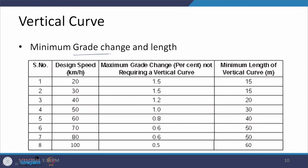There are minimum values to be taken care of regarding minimum grade change and length. For design speeds ranging from 20 km/h to 100 km/h, the first column shows the maximum grade change in percent not requiring a vertical curve. For example, at 100 km/h, if the maximum grade change is 0.5 percent, no vertical curve is required up to that point. But if values go beyond this, a vertical curve must be designed.